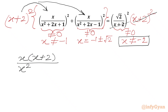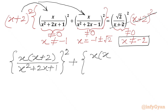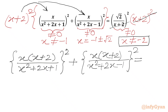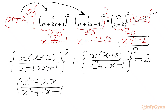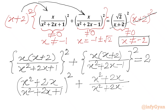In the denominator we have x squared plus 2x plus 1 whole squared, plus x times (x+2) in the denominator x squared plus 2x minus 1 whole squared, equal to 2.